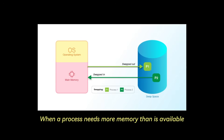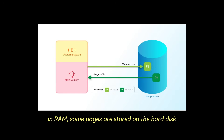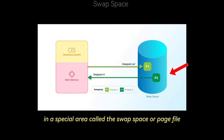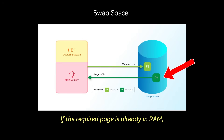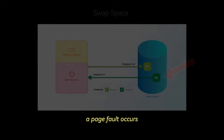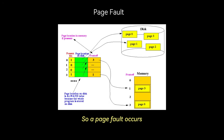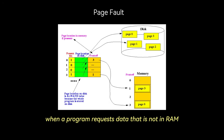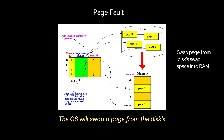When a process needs more memory than is available in RAM, some pages are stored on the hard disk in a special area called the swap space or page file. If the required page is already in RAM, the CPU can access it directly. Otherwise, a page fault occurs — when a program requests data that is not in RAM, the OS will swap a page from the disk's swap space into RAM.